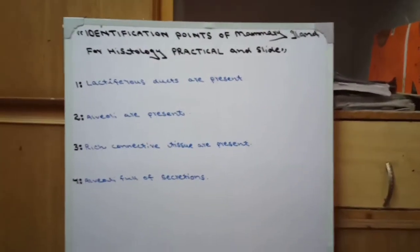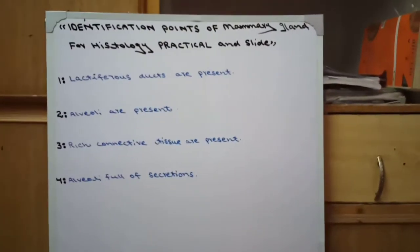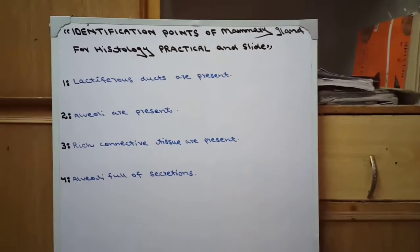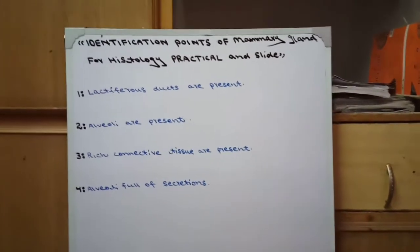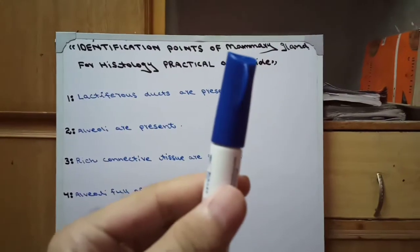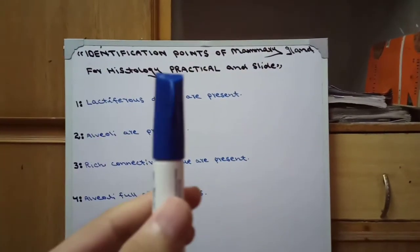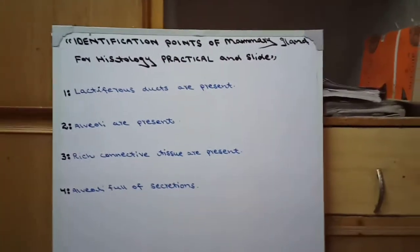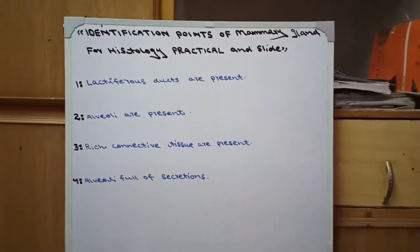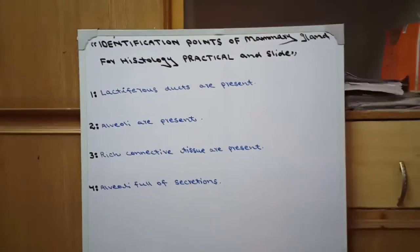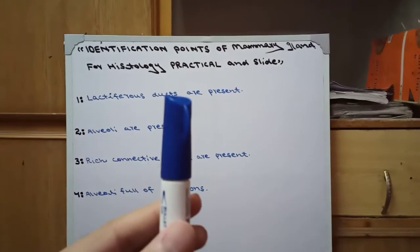Assalamu alaikum friends, welcome to my channel MBBS and BDS lectures. Today our topic is histology identification points of mammary gland for histology practical and slide. There are four identification points of mammary gland. Number one: lactiferous ducts are present. Number two: alveoli are present.